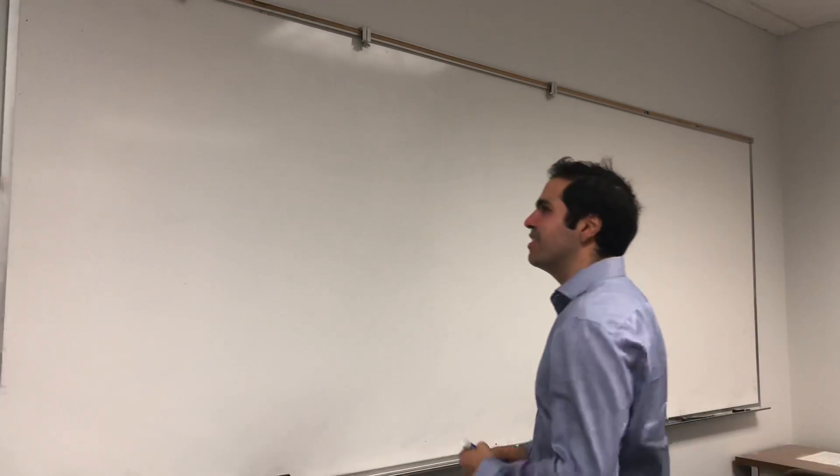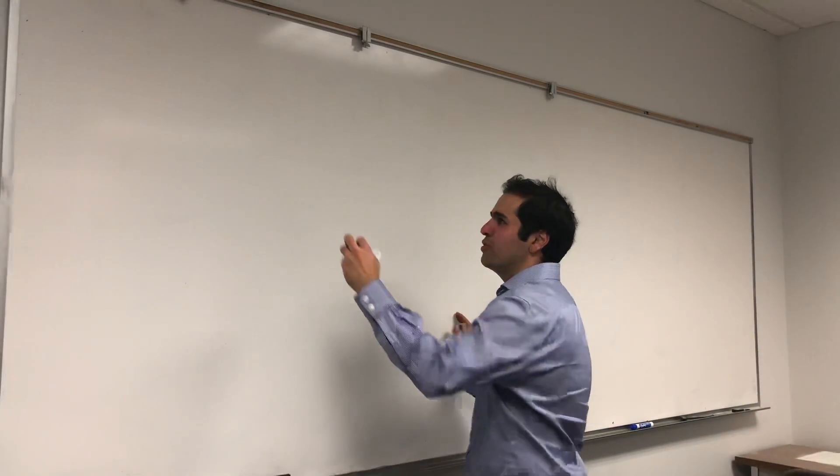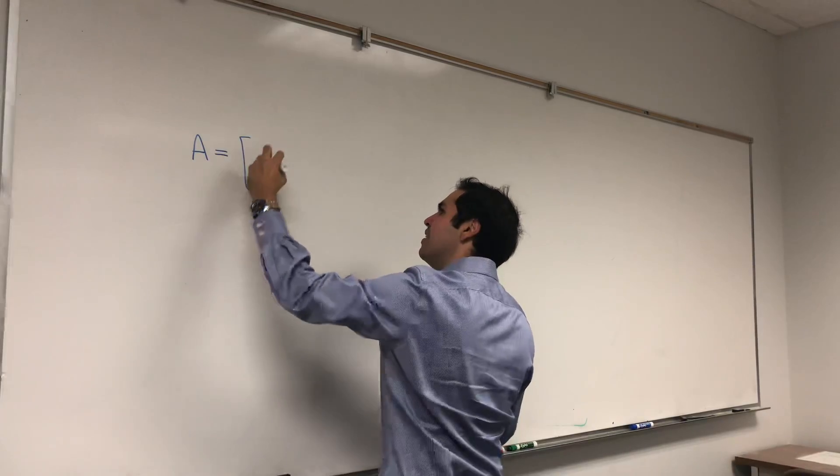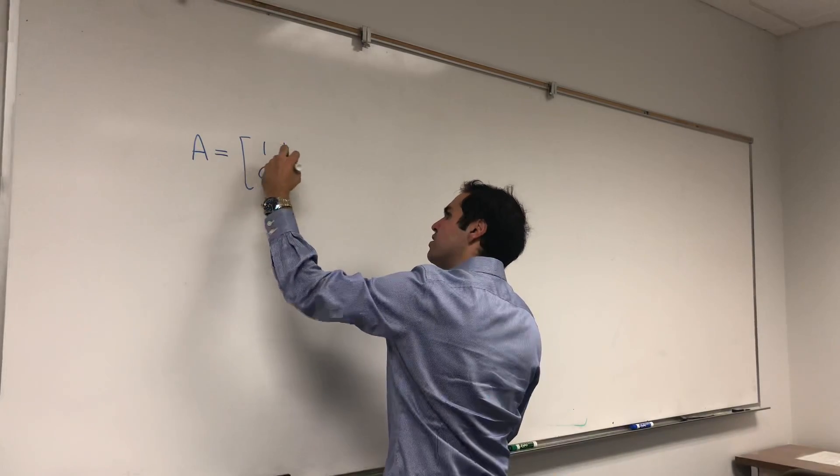So a matrix which cannot be written of the form A equals PDP inverse. And in fact, the example is simply the matrix 1, 1, 0, 1.